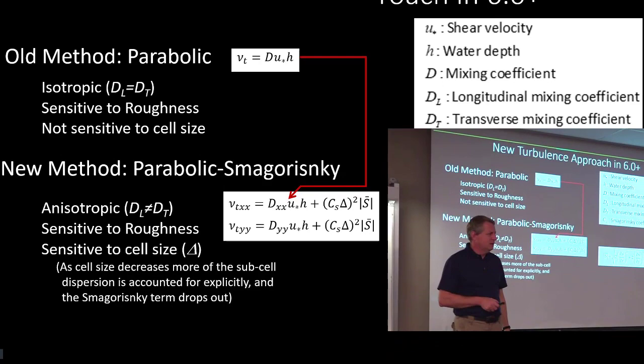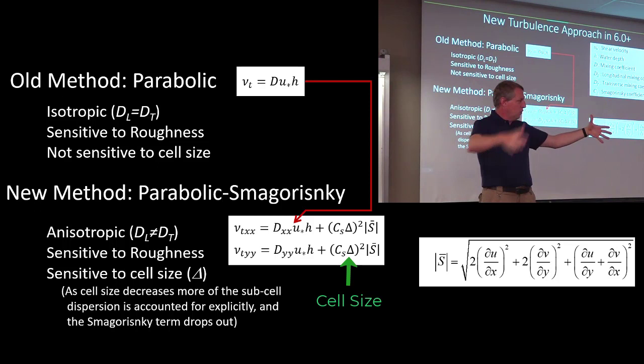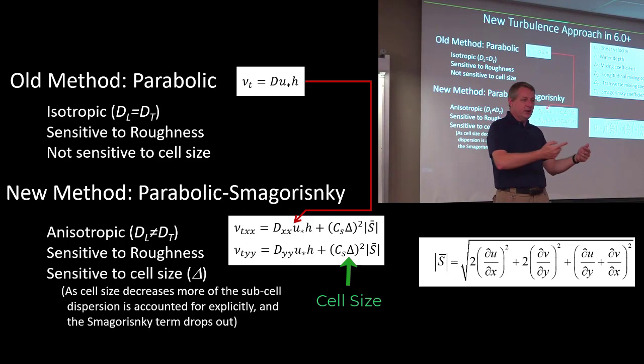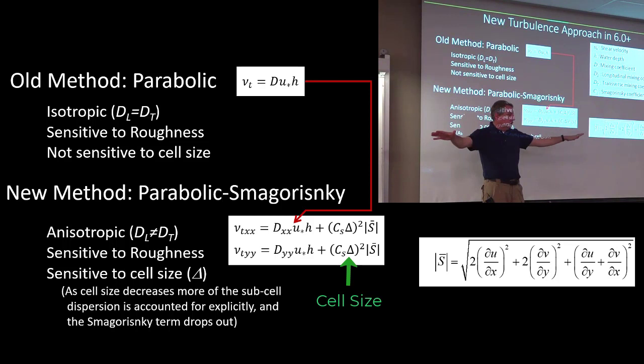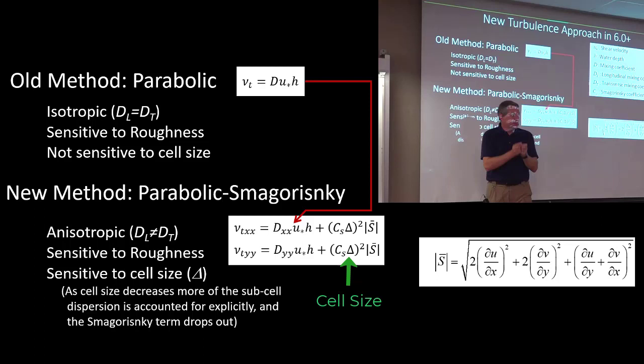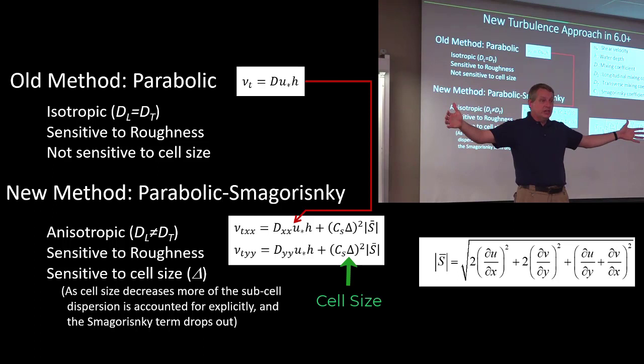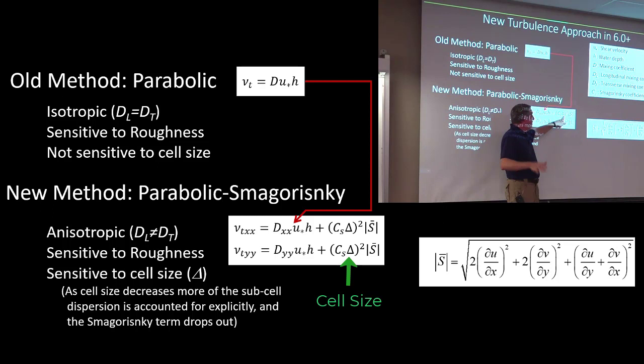If you have a big cell, there's lots of turbulent things going on in that large cell that you're not accounting for. As your cell size gets smaller in a subgrid model, you've got more cross sections, and those cross sections are accounting for more of the irregularities and more of the contraction expansion. And so the smaller your cross sections get, the less you need to account for this kind of spatial process of mixing and turbulence. And so the smaller your cell sizes get, the less the Smagorinsky component adds. But if you're using huge cell sizes, you're probably overlooking a lot of turbulence, so we're going to ratchet up the Smagorinsky component to compensate for that.